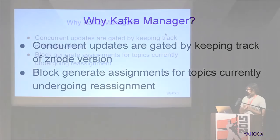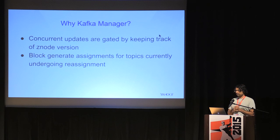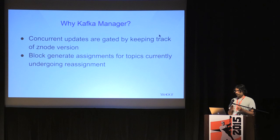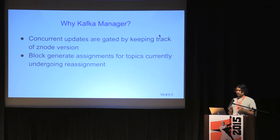A few other things you get with Kafka manager: when two concurrent updates are happening, if two users are trying to modify the same exact topic config at the same time, the command line utility would just let that happen. The second user would not see what change the first user had applied, and the second change would just overwrite the first. With Kafka manager, we can gate the updates because we can keep track of the Z node version that we had when we read the initial topic config. This makes it safer to update topic configuration since two people cannot overwrite each other's changes.